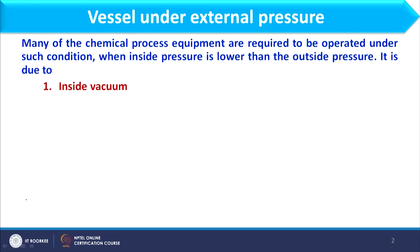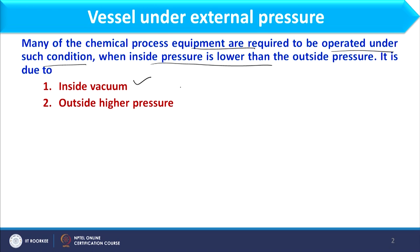Many chemical process equipments are required to be operated under external pressure conditions, where inside pressure is lower than outside pressure. This occurs when there is a vacuum inside — obviously outside pressure would be higher than inner pressure. If outside pressure exceeds atmospheric while inside is at atmospheric, or if there is internal vacuum combined with external pressure above atmospheric, all these conditions are considered external pressure and the vessel is designed differently.